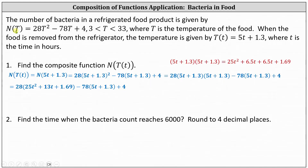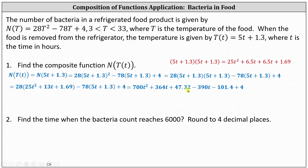Notice that in our final result, we're going to have n as a function of t, where t is time, rather than a function of T, where T is the temperature of the food. Now we clear the parentheses by distributing — 28 here and negative 78 here. This gives us 700t squared plus 364t plus 47.32. Then distributing negative 78, we have minus 390t minus 101.4, and then plus 4.